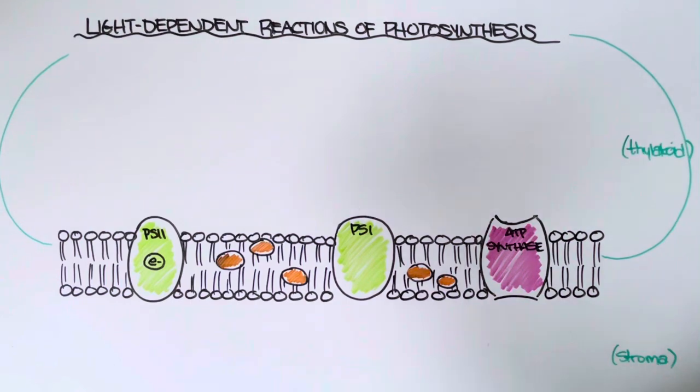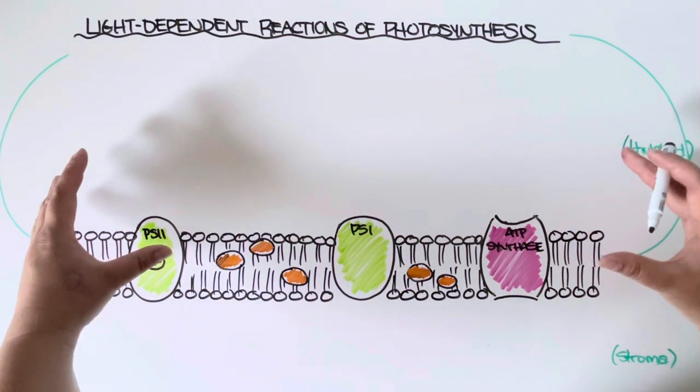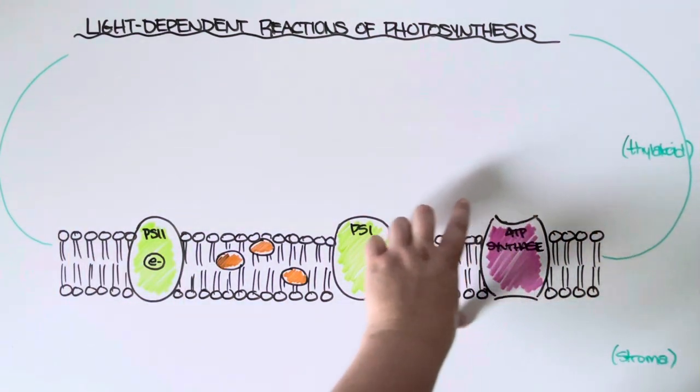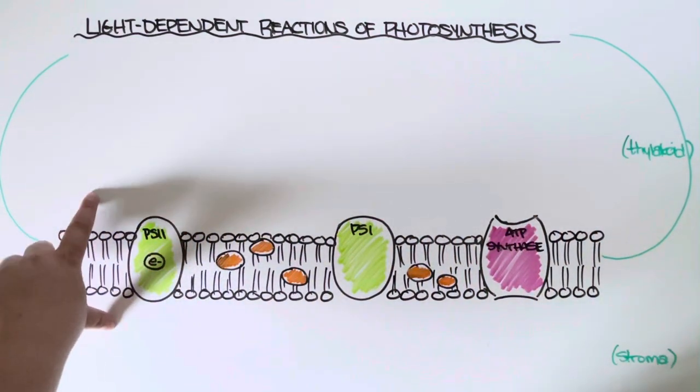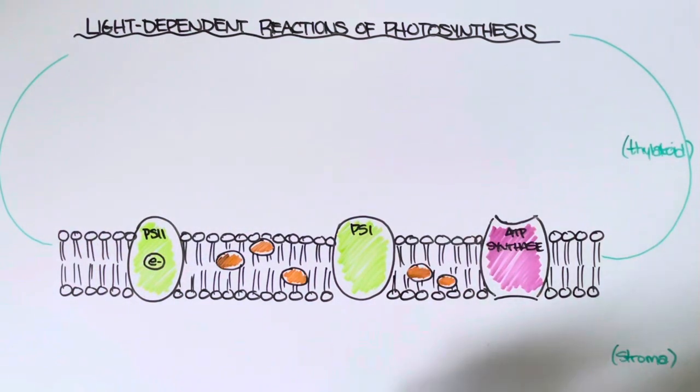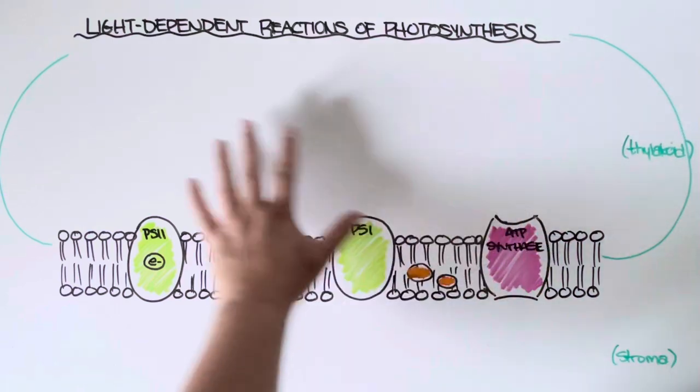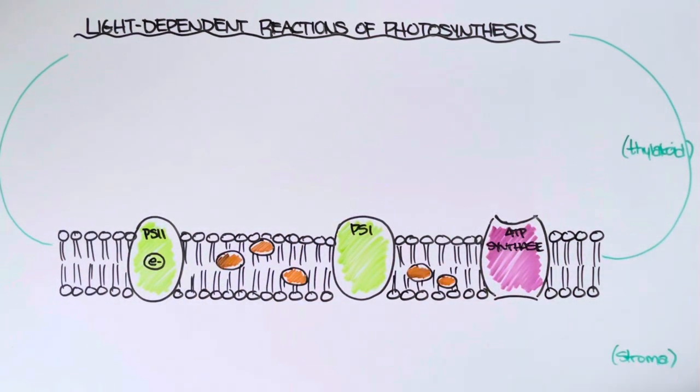So what we're going to do is zoom into a single thylakoid within a chloroplast and visualize some of the proteins that are embedded in the thylakoid membrane. Most of the reactions that take place during this step occur either in the thylakoid or along the thylakoid membrane.